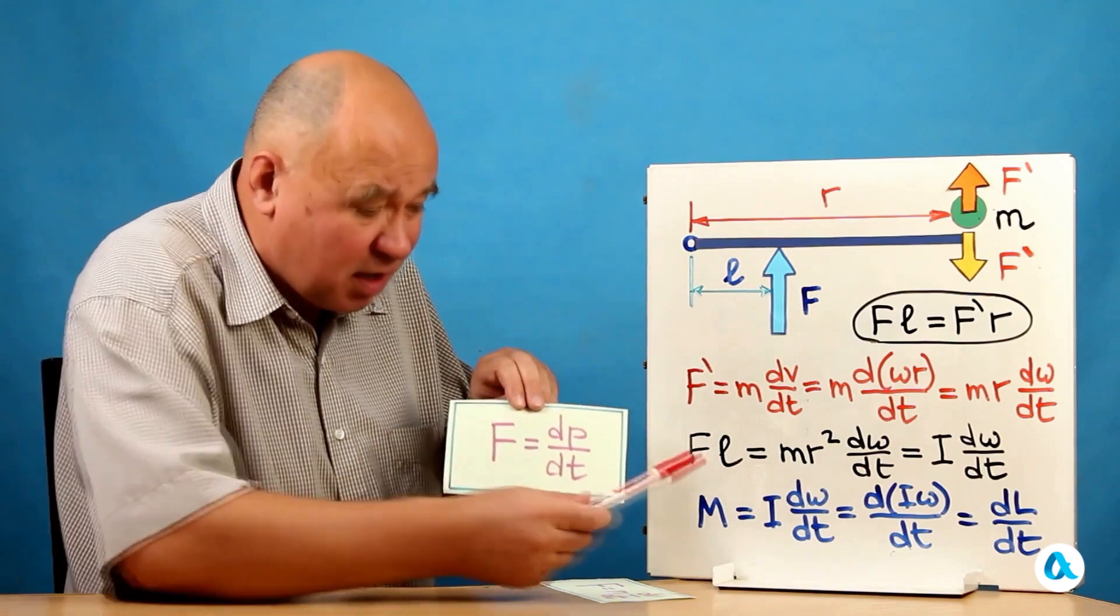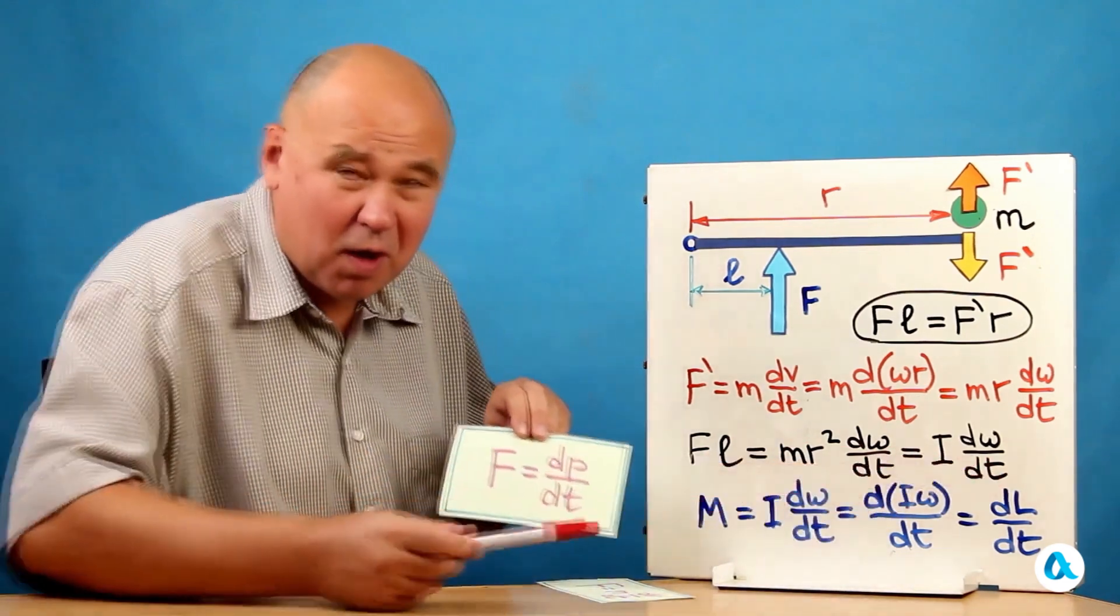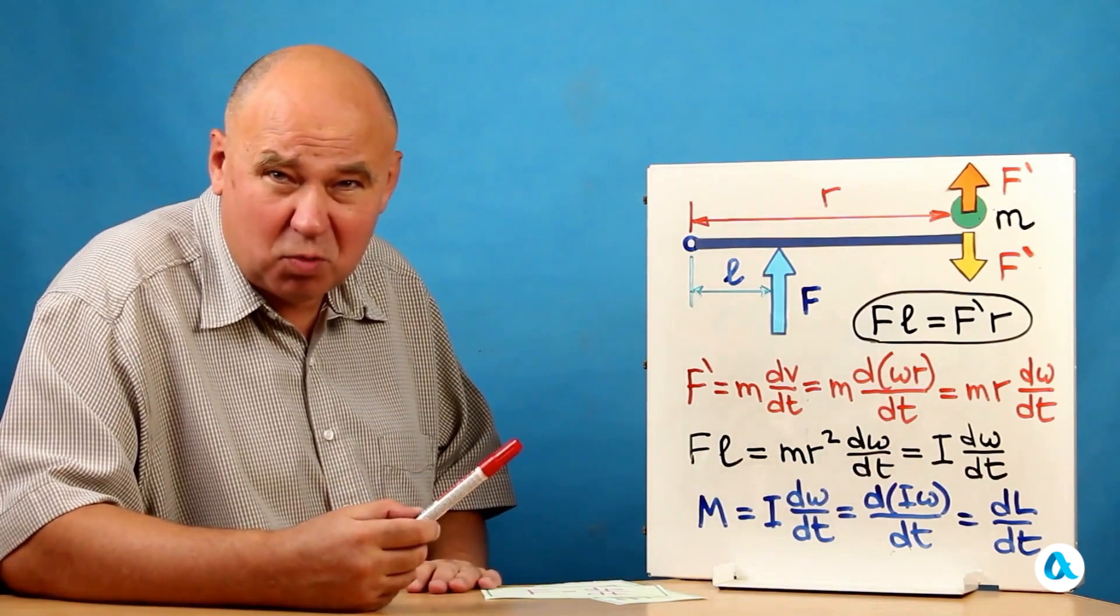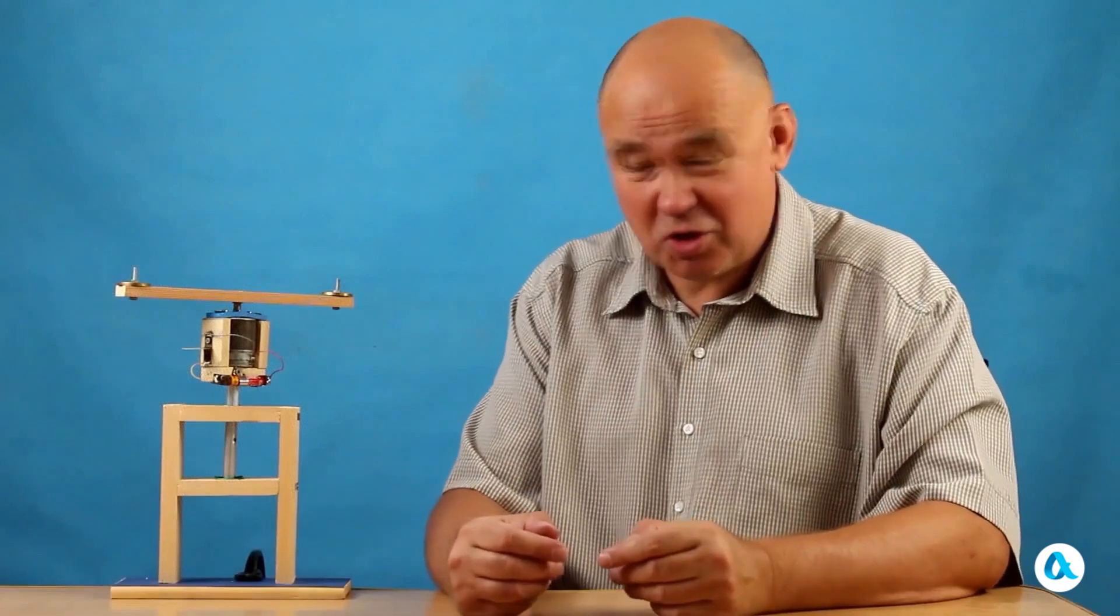So, there was a force here, a moment of force here. Accordingly, there was momentum here, and a moment of momentum here. An analogy is established between rotational motion and translational motion. This was a formal introduction.